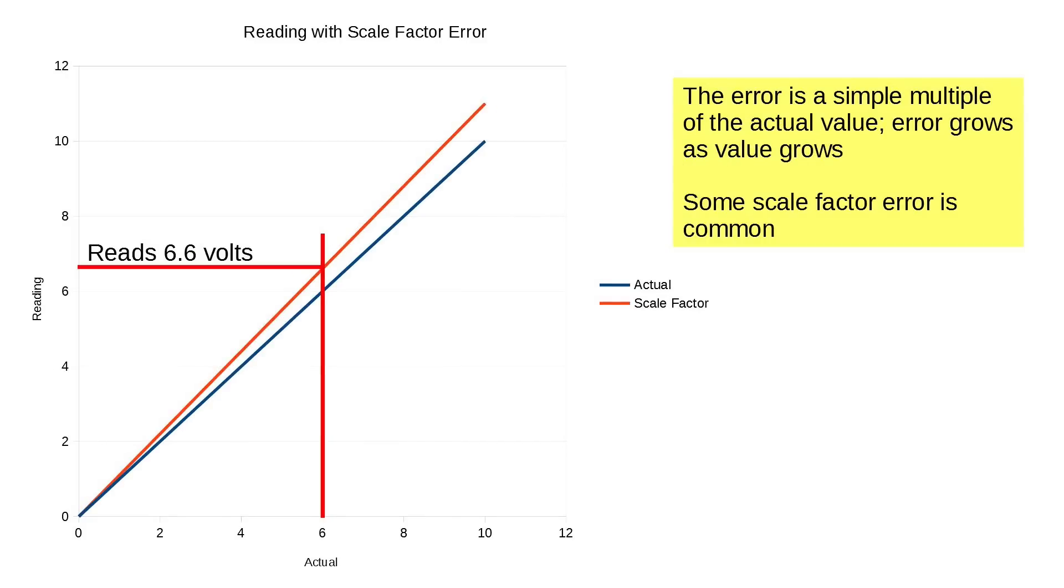Here's a scale factor error. Notice the shape of the curve is a little different. You get down toward the bottom where the zeros are, and there is no error. But the error is a multiple of the actual value. It grows as the actual value grows. Some scale factor error is common in instruments, not to this degree. I mean, this is a 10% scale factor error. So, an actual six-volt reading gives us a readout of 6.6 volts.